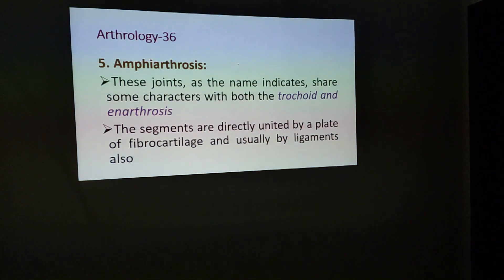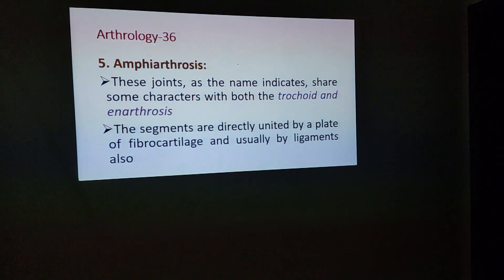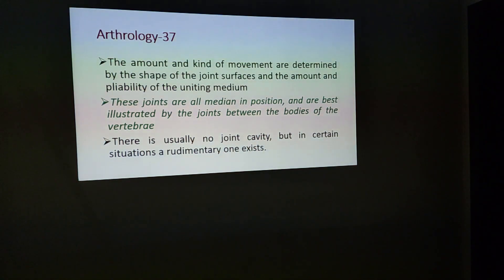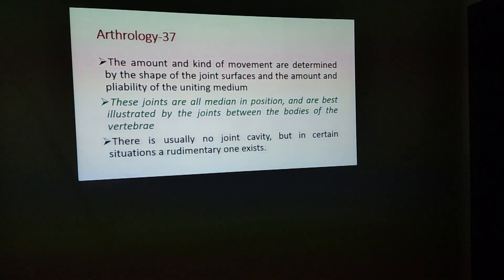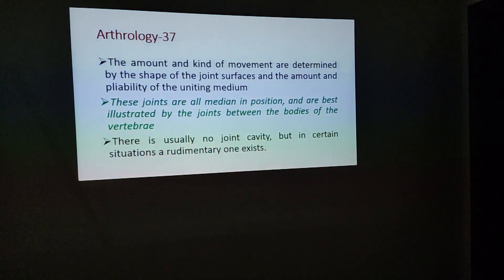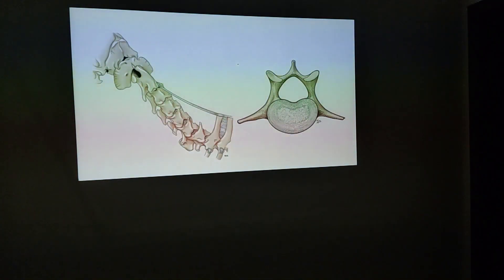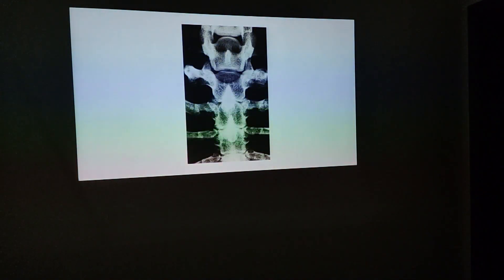Amphiarthrosis joints, as the name indicates, have some characteristics of both trochoid and enarthrosis joints. The segments are directly united by a plate of fibrocartilage and usually by ligaments also. The amount and kind of movements in these joints depend upon the pliability of the uniting medium. These joints are almost all median in position and are best illustrated by the joints between the bodies of the vertebrae. There is really no joint cavity, but in certain situations a rudimentary joint cavity may exist.